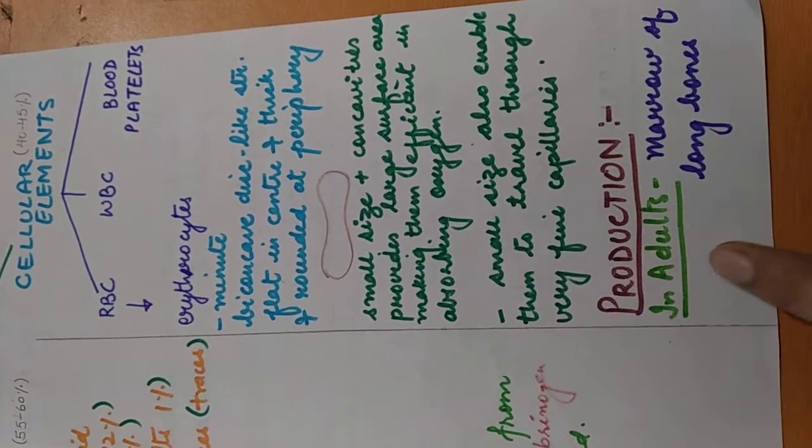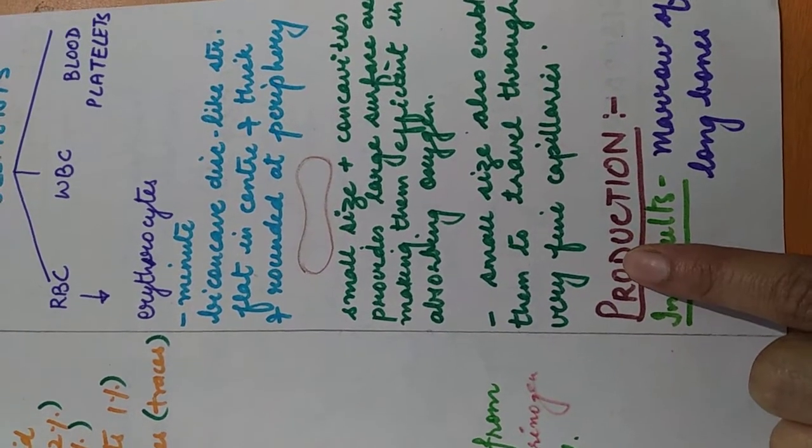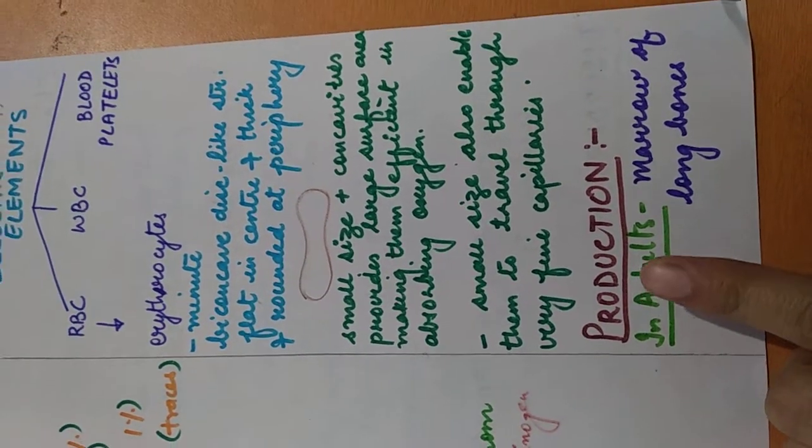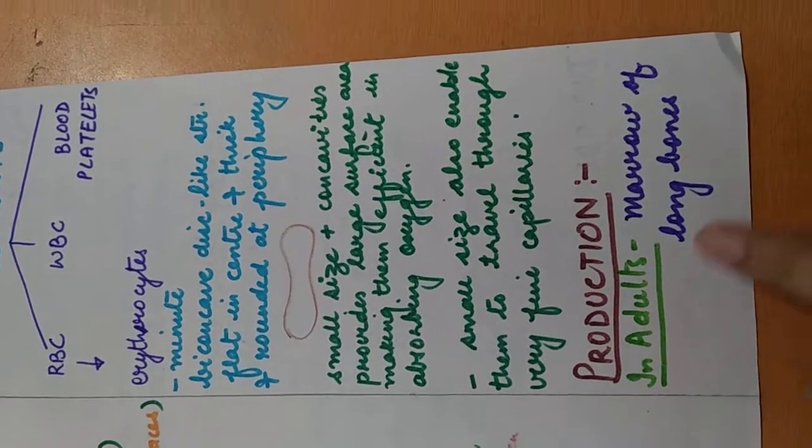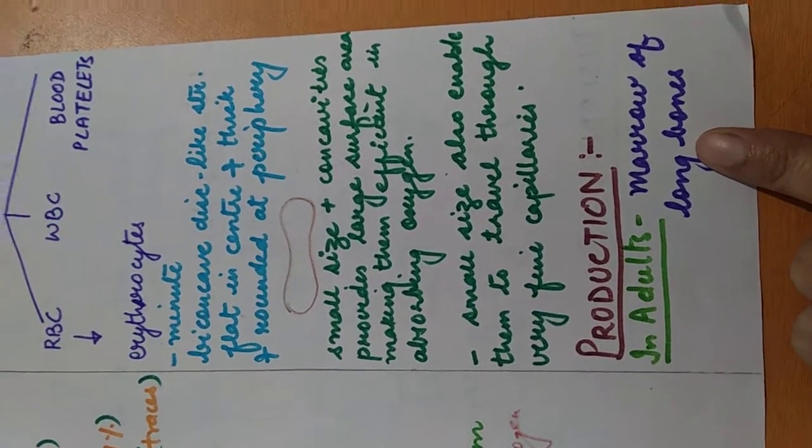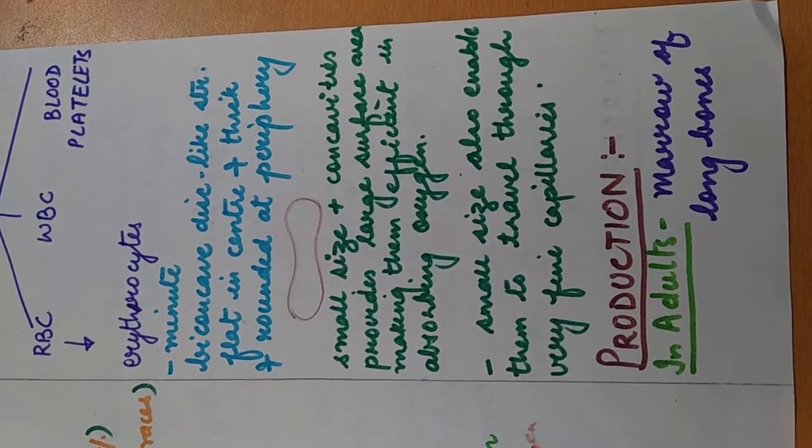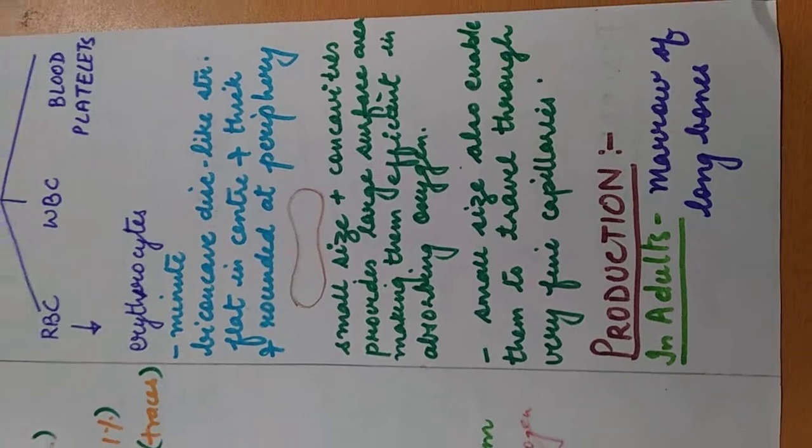Now, where they are produced? In adults, we are talking about the production of RBCs. In adults, the RBCs, the red blood cells, they are produced in the marrow of long bones, that means bones that are specially in the ribs, our breast bone, and ileum of the hip girdle.